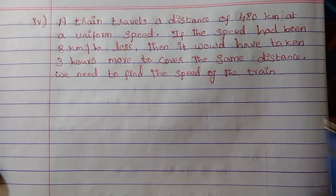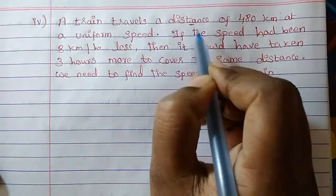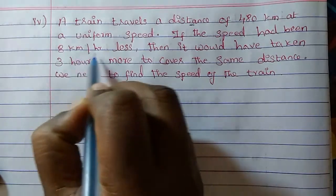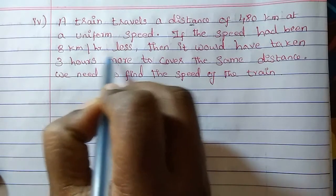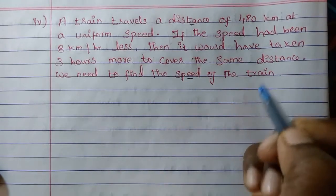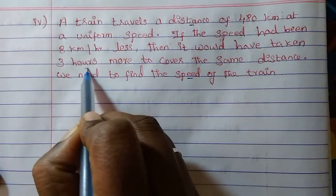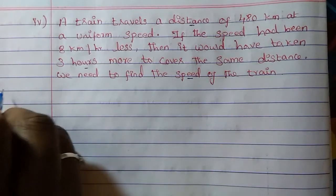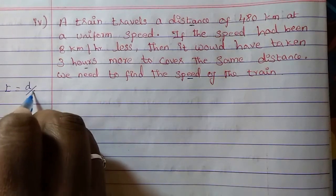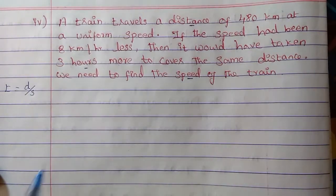Whenever a problem involves speed, distance, and time — km per hour means time is involved. Distance is given, speed is given, and time is given as 3 hours more. The formula to use is: time = distance divided by speed. This is the formula we have to use.